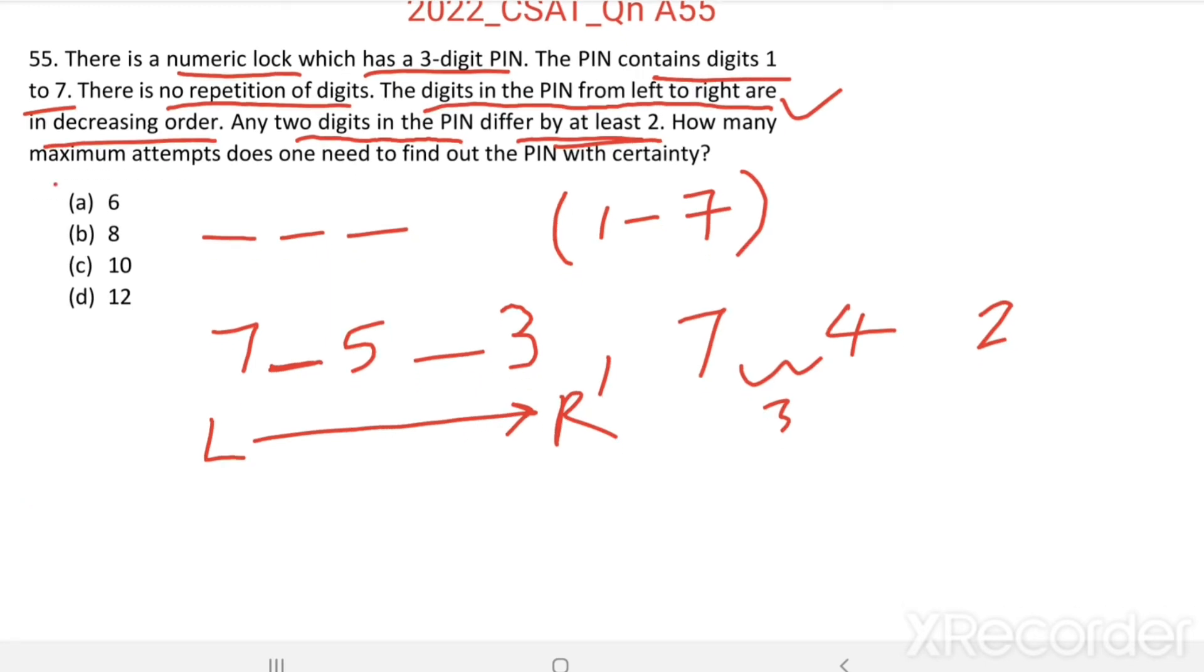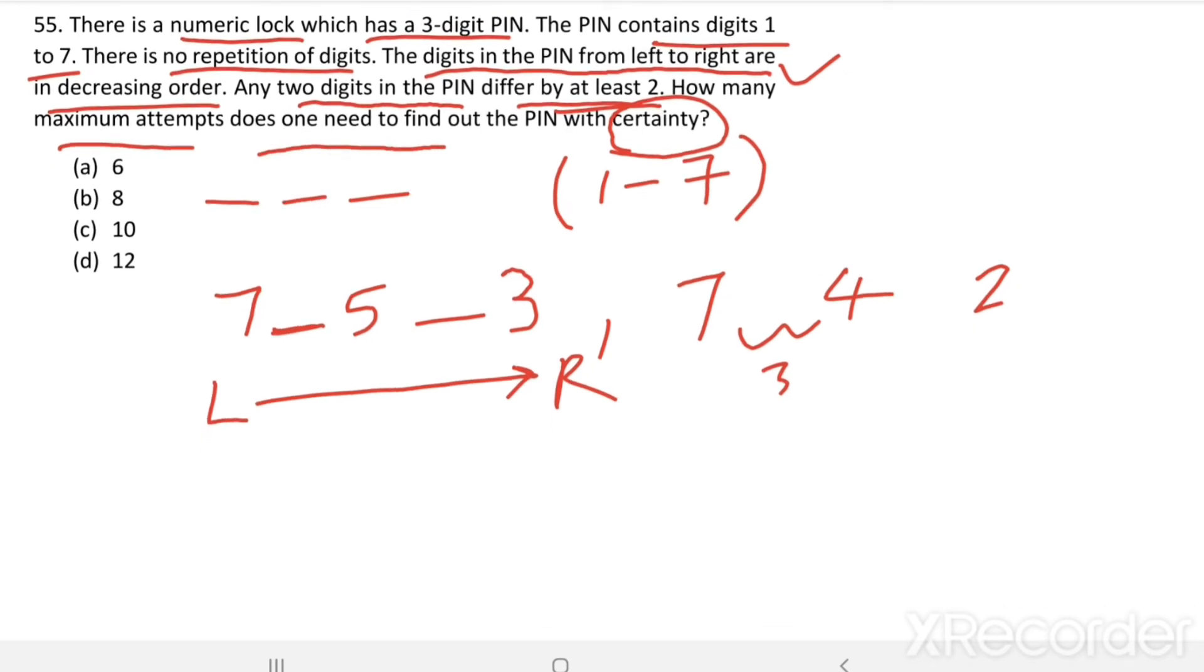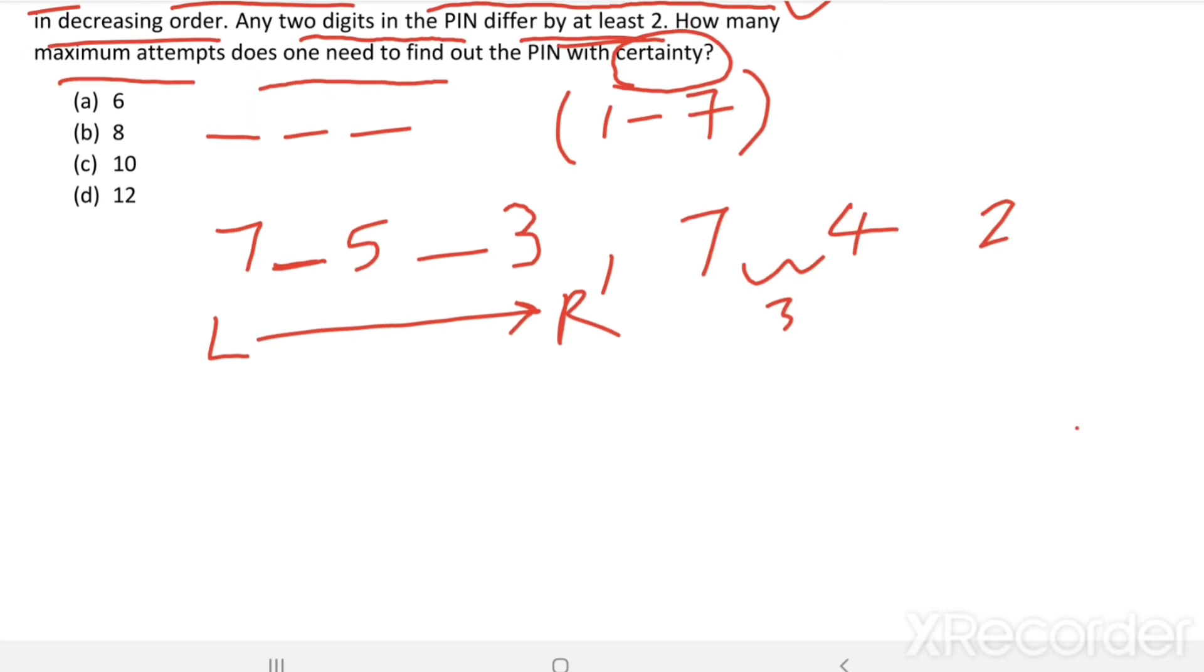Then, how many maximum attempts does one need to find out the PIN with certainty. So, if you are trying for these many attempts, you can definitely unlock the lock. So, how many attempts require? That is what we have to find. So, first digit, second, third.